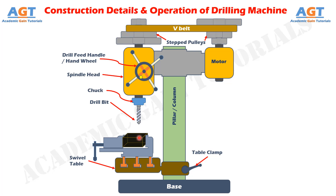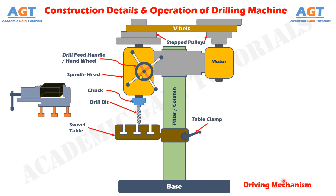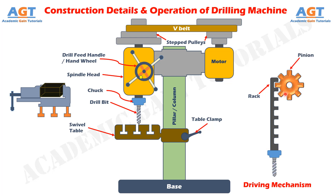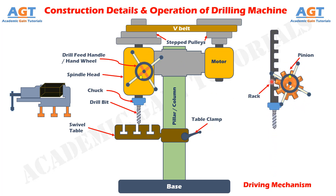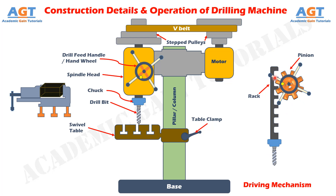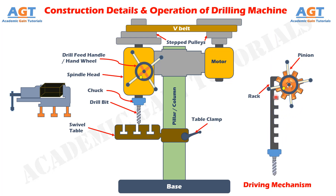Now let's look at the internal rack and pinion driving mechanism used to move the spindle and chuck with cutter upwards and downwards when the hand wheel is rotated. The driving mechanism is constituted of the rack; the chuck is connected to the rack, and there is a drill bit mounted on the chuck. Connected to this rack we have a pinion; there are teeth cut on the outer diameter of the pinion, and the rack also consists of teeth cut on its surface. The rack and pinion are meshed together using these teeth. The hand wheel is attached to this pinion. When we rotate the hand wheel clockwise or anticlockwise, the pinion rotates with it, and with the rotational motion of the pinion, the rack meshed to it starts moving upwards or downwards along with the chuck and drill bit to provide the desired feed to the workpiece during operation.